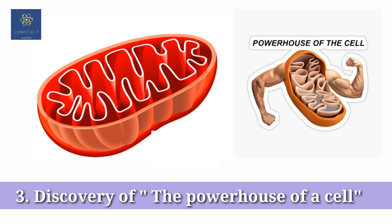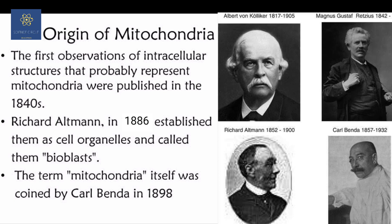Mitochondria, generally referred to as the powerhouse of the cell, was first discovered in 1857 by Albert von Kölliker. Later it was coined as 'bioblast,' meaning life germs, by Richard Altman in 1886. The organelle was then renamed mitochondria by Karl Benda twelve years later.